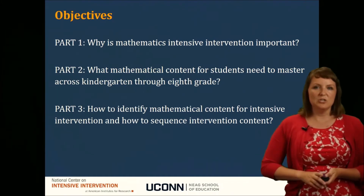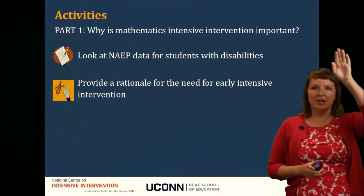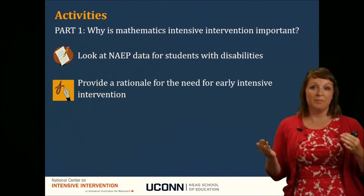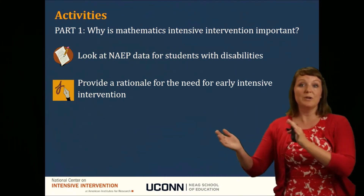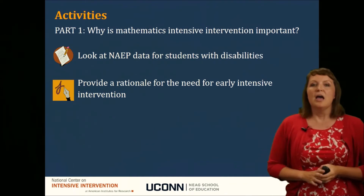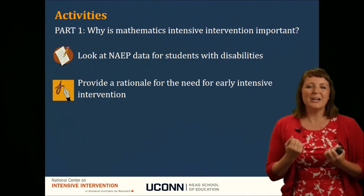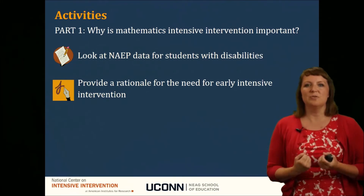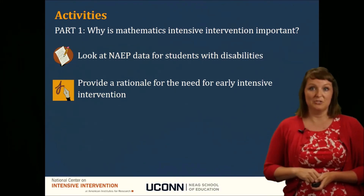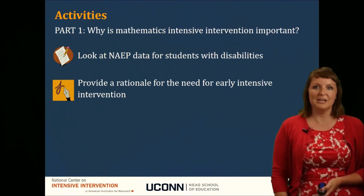Some of the activities you're going to do: in part one, you'll look at NAEP data for students with disabilities and compare their performance to students without disabilities. You'll also do a journal activity where you provide a rationale for why we need intensive intervention — you might need to convince people in your school that this is worthwhile, and this will get you started thinking about that.